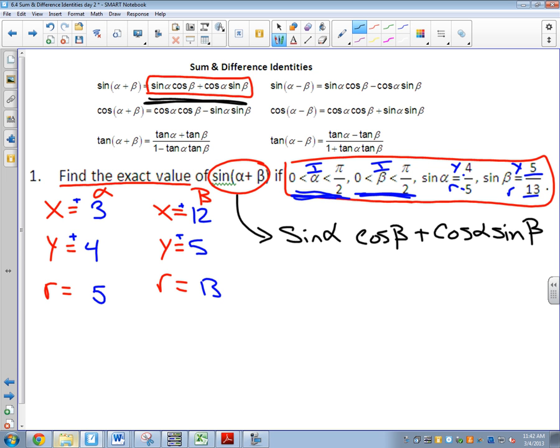All I'm going to do is write down the fraction for each one. So if it asks me for sine of alpha, I'm looking at the alpha triangle, and I'm doing y over r. So it's positive, four over five, times cosine of beta. Look at the beta triangle. Cosine is x over r, so twelve over thirteen.